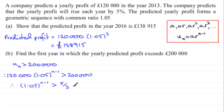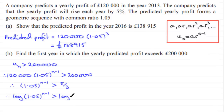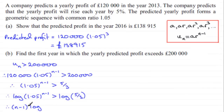To find the power we take logs of both sides. Taking log base ten, we get log(1.05^(n−1)) is greater than log(5/3). Using the power rule for logs, we bring the power to the front, giving (n−1) × log(1.05) greater than log(5/3). Check out the logs tutorials on my website if needed.